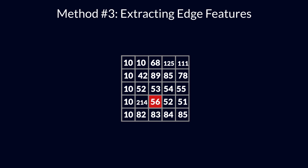For this example, we have the highlighted value of 85. We will find the difference between the values 89 and 78. Since this difference is not very large, we can say that there is no edge around this pixel. Now consider the pixel with value 125 in the highlighted image — since the difference between the values on either side of this pixel is large, we can conclude that there is a significant transition at this pixel, and hence it is an edge.